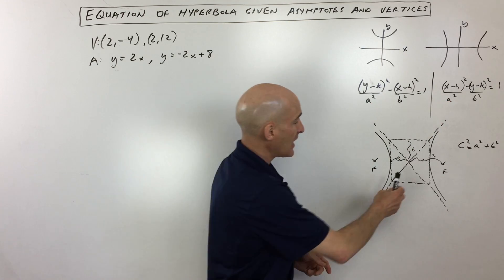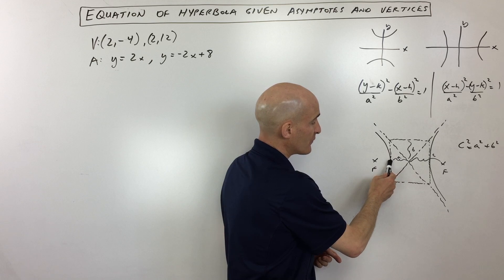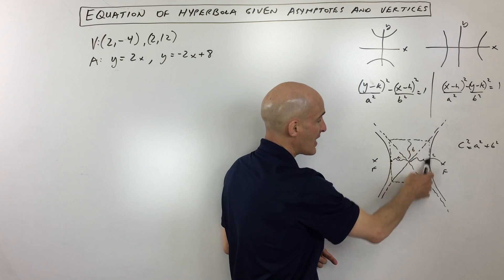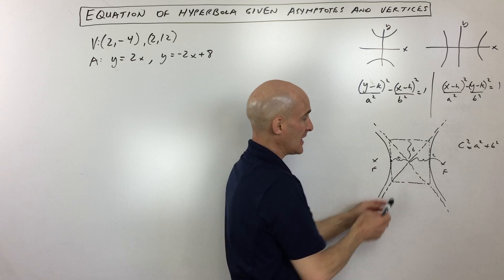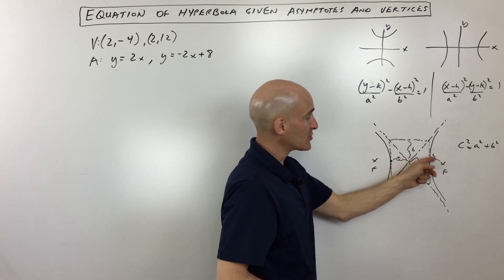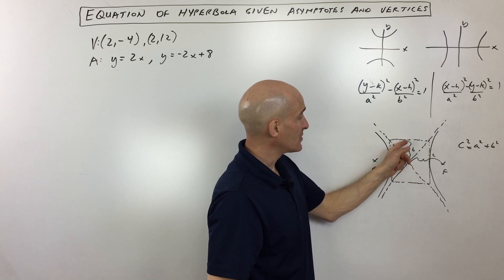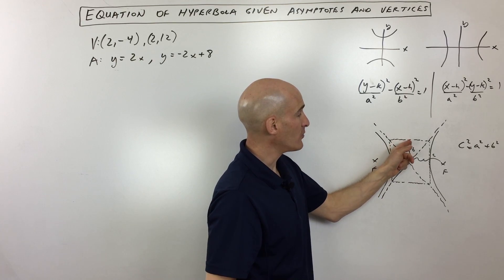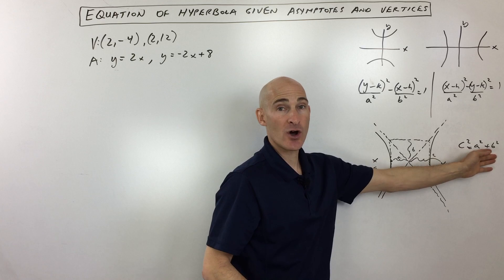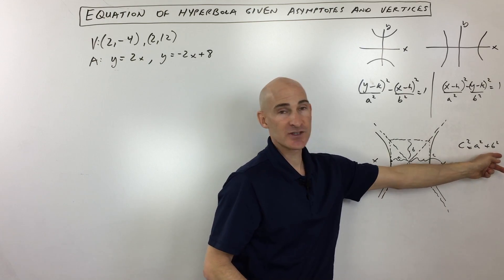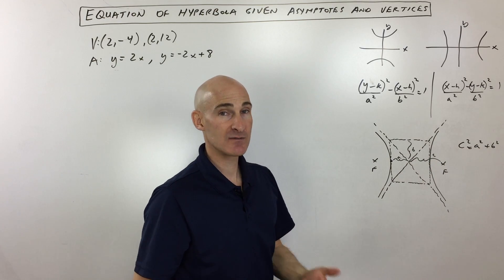Just to refresh, the distance from the center to the vertex, this point where the hyperbola bends or turns, that distance is a. The distance from the center to the focus, that distance is called c, and the distance from the center to right here, this distance is called b. And the equation that relates all those values together is c squared equals a squared plus b squared, just like Pythagorean theorem.